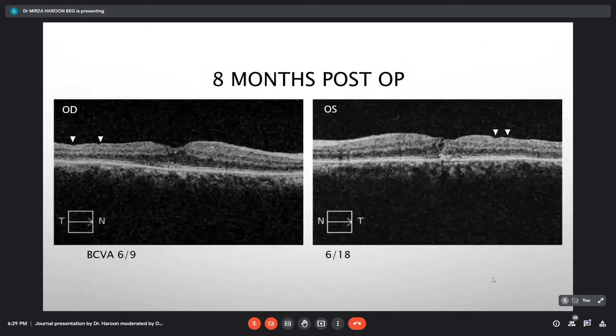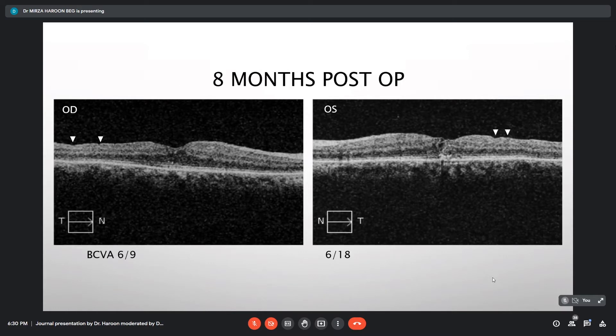An OCT scan was taken at 8 months post-operatively. Right eye at this point of time showed inner retinal dimples which were seen in both eyes, with visual acuity being 6/9 and 6/18. Left eye had incomplete closure with some bridging glial tissue.